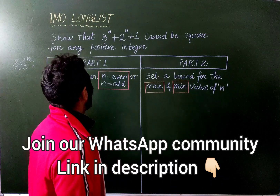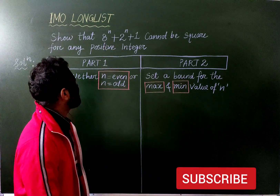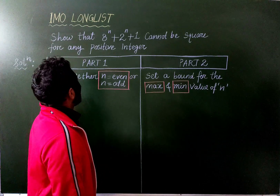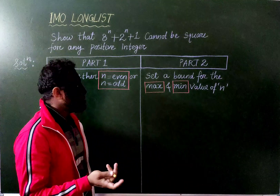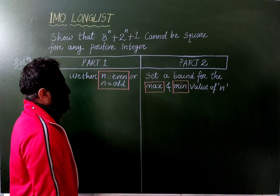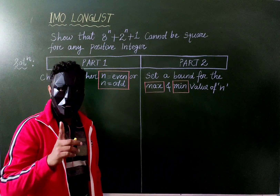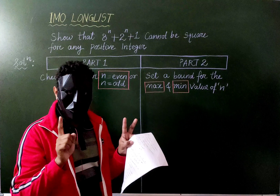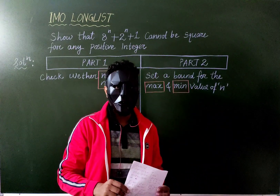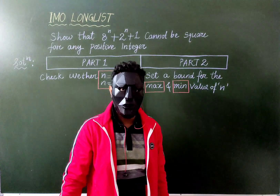Hello everyone, today we are going to solve this problem. We have seen that the expression 8 to the power n plus 2 to the power n+1 cannot be a square for any positive integer n — we have to prove that. I have divided the plan of my solution into two parts. Part one: check whether n is even or odd, working two cases. Part two: set a maximum and minimum value, and check every case to see whether this expression is a square.